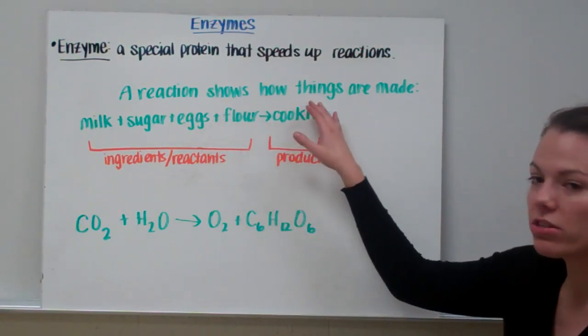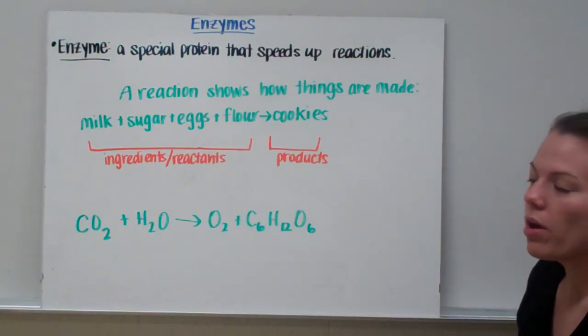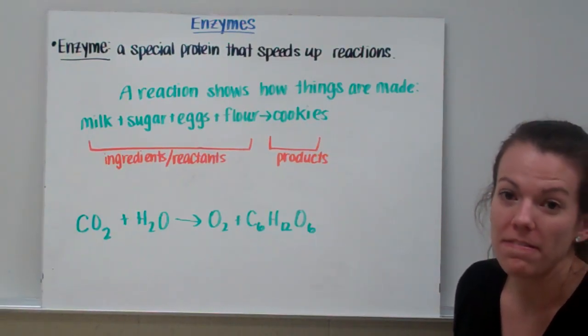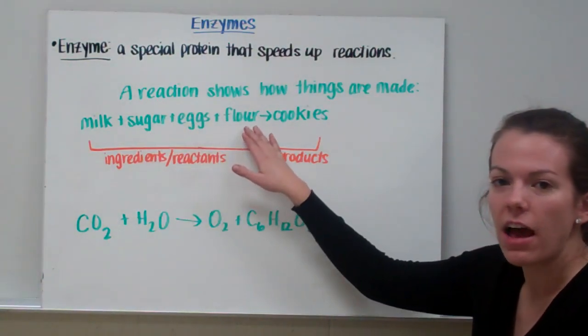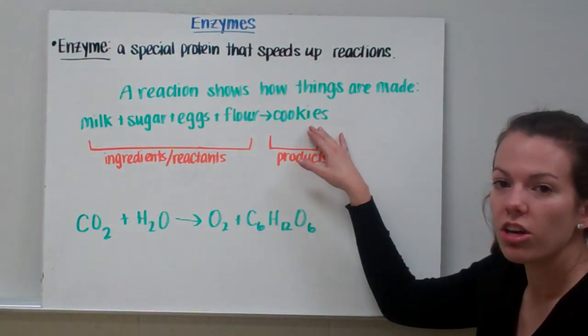A reaction shows how things are made. So if we're going to make cookies, which are one of my favorite things to eat, you'd need to mix together milk, sugar, eggs, and flour, maybe some other things too, and then you would make cookies.